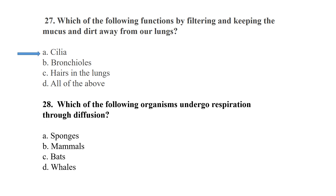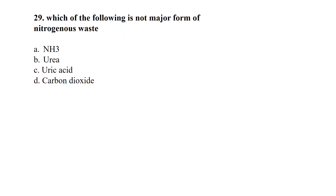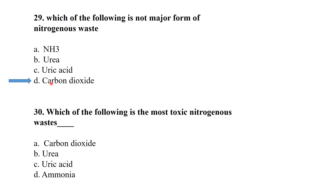Which organism undergoes respiration through diffusion? Sponges respire through their pores. Which of the following is not a major form of nitrogen waste? Carbon dioxide is not a nitrogen waste. Ammonia is the most toxic form of nitrogen waste.